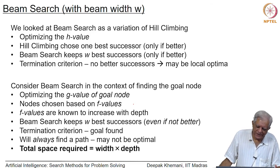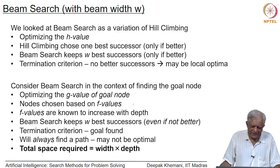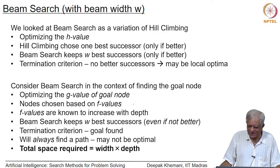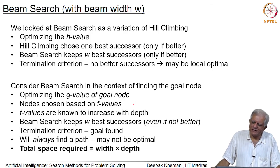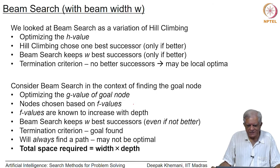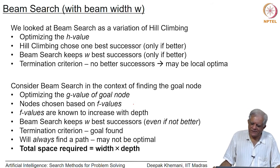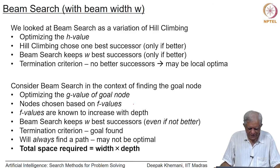The important thing about beam search from a space perspective is that it requires less space. The total space required — open plus closed — is width times depth: width is the number of nodes kept at each layer and depth is the number of layers explored. The space requirement of beam search is linear in nature. As you go further you add a linearly increasing amount of space — adding w nodes at every level instead of multiplying, which is exponential growth. That is the main reason we are looking at beam search: to save space.